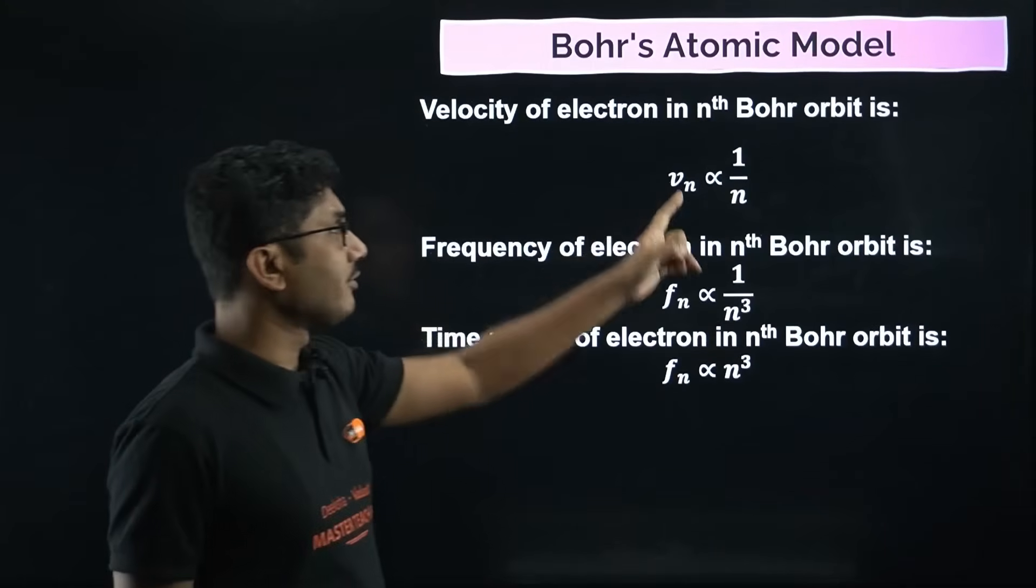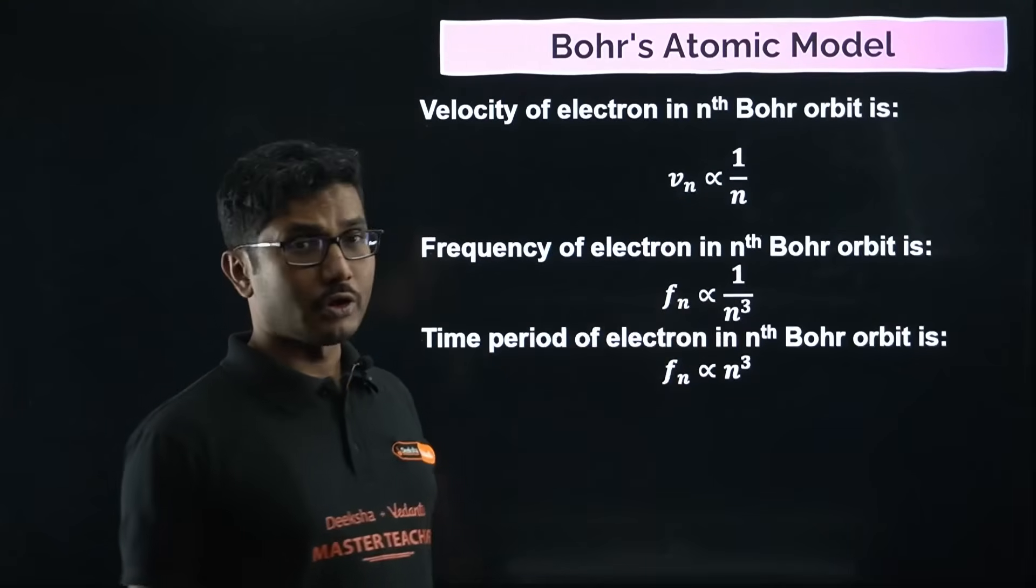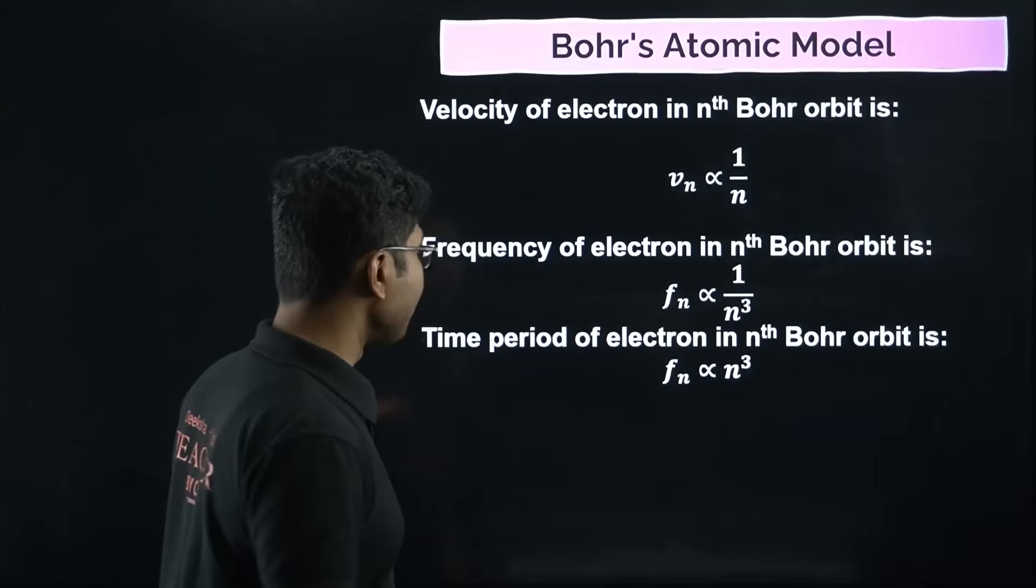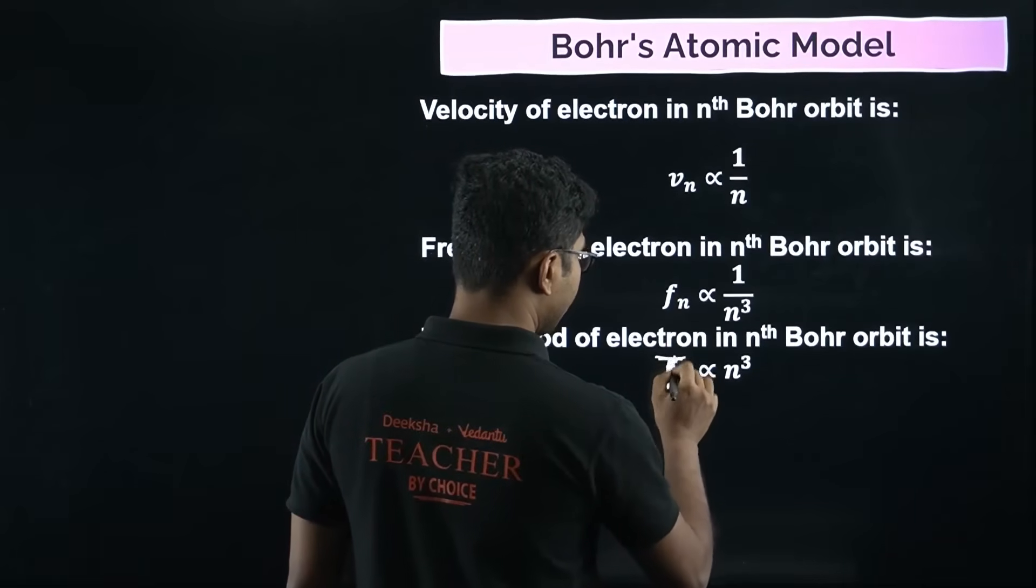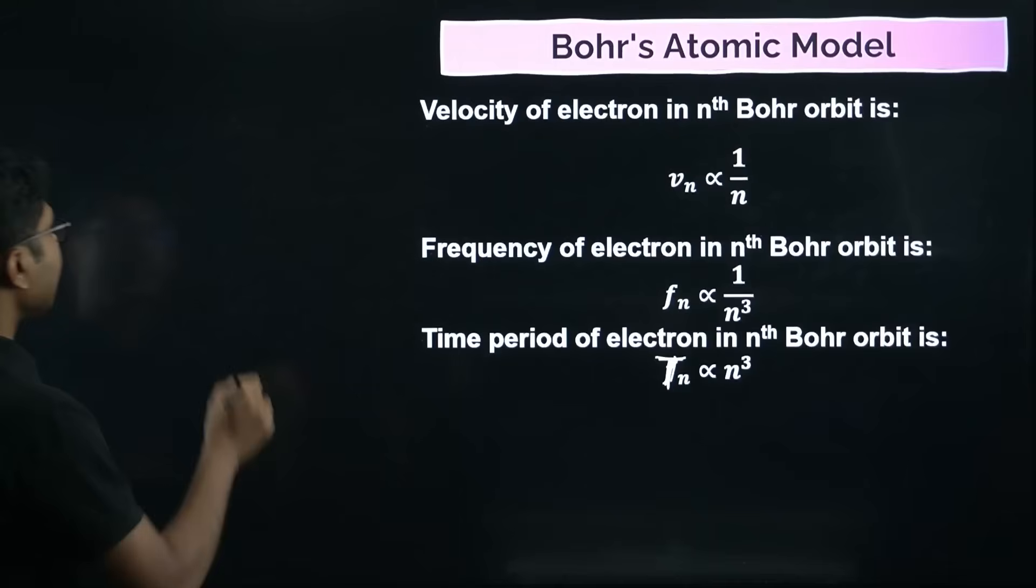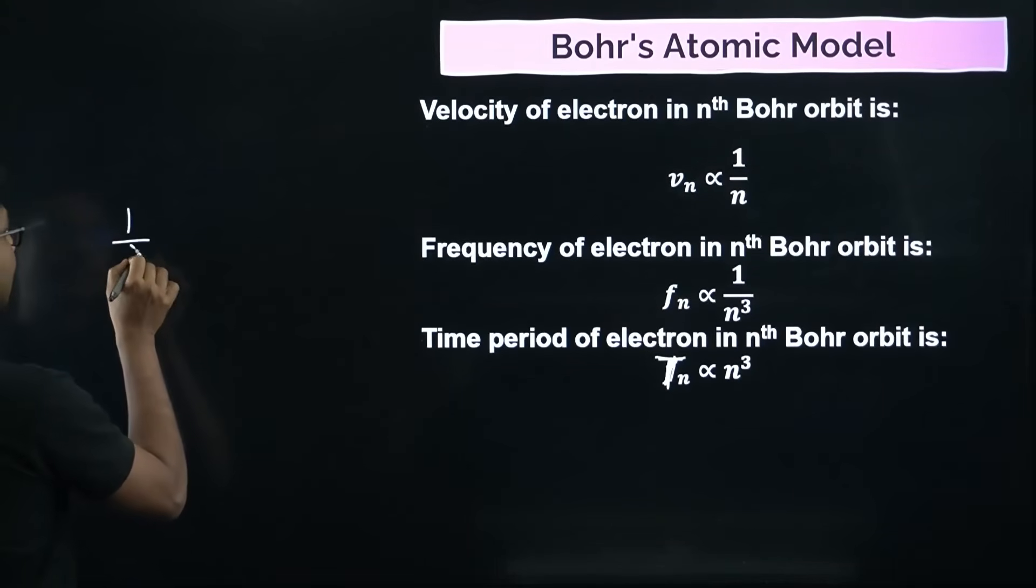For hydrogen, these two formulas are general formulas, and for these two you have to put Z equals to one. For any other hydrogen-like atom, for example singly charged helium or doubly charged lithium, you can use these formulas to calculate based on the atomic number. Velocity of electron in nth Bohr orbit is proportional to one by n. Frequency is proportional to one by n cube. Time period T_n is proportional to n cube.